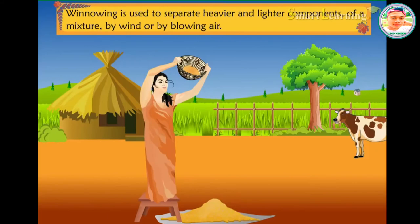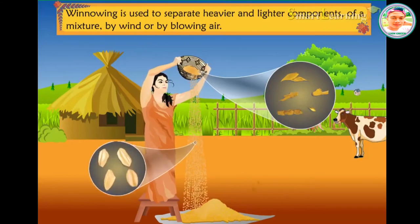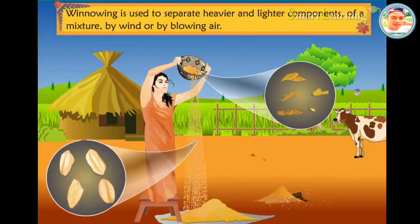By this process, the husk is blown away as it is much lighter than the grain. So when the grains are gently dropped to the ground from a height, only the grains are collected and the husk is blown away.